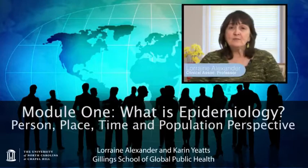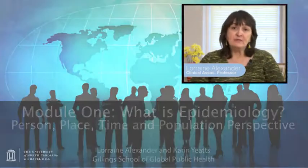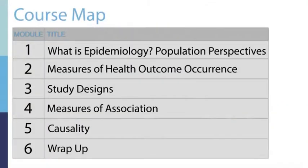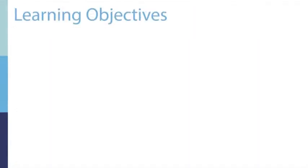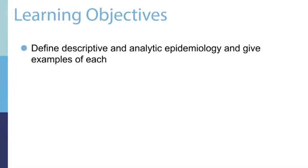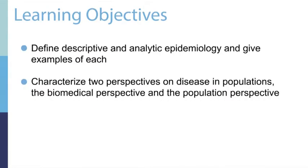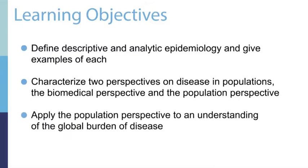In this lecture, we'll discuss person, place, time, and the population perspective of epidemiology. After you've reviewed this lecture, you should be able to define descriptive and analytic epidemiology and give examples of each, characterize two perspectives on disease in populations — the biomedical perspective and the population perspective — and apply the population perspective to an understanding of the global burden of disease.